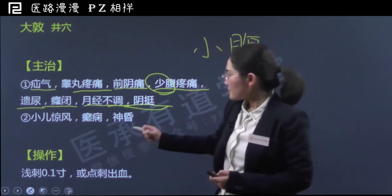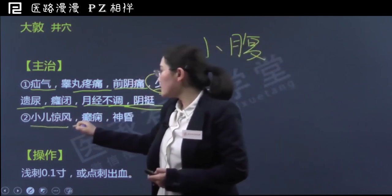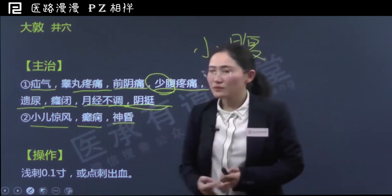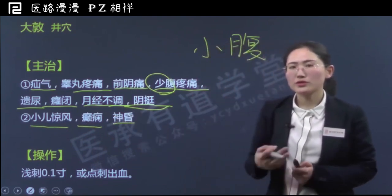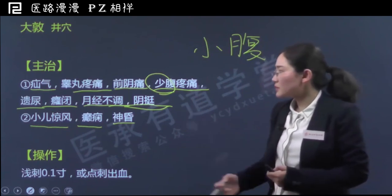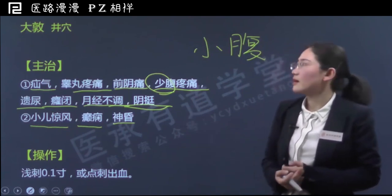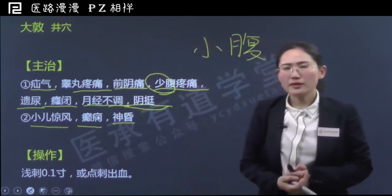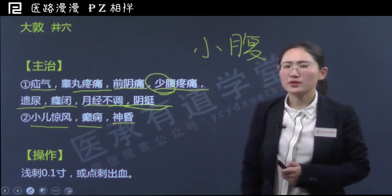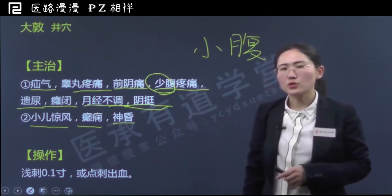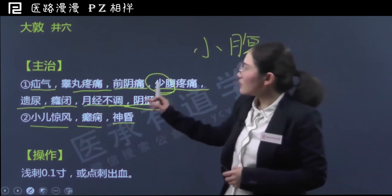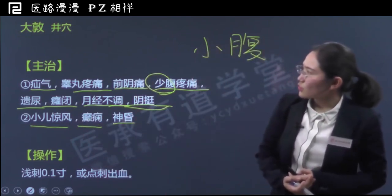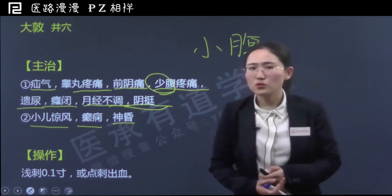大敦可以治疗的第二大类病症是：小儿惊风、癫痫、神昏。这三类病症的共同点都是神志失常或者神志昏迷、元神被扰。因为大敦是井穴，井穴的特性善于开窍醒神，治疗一系列神志昏迷的病症，所以大敦可以治疗这三类病症。